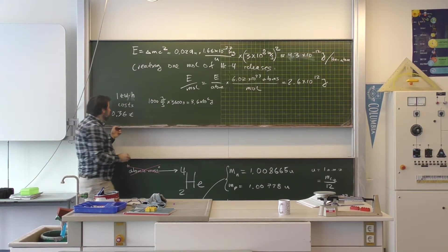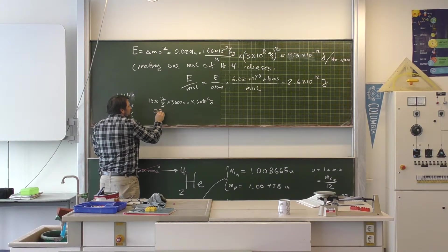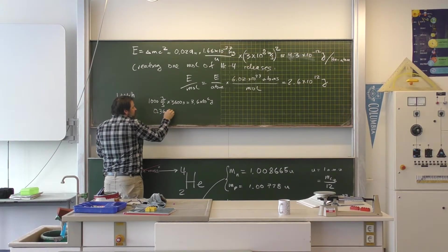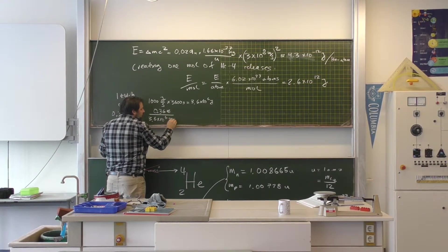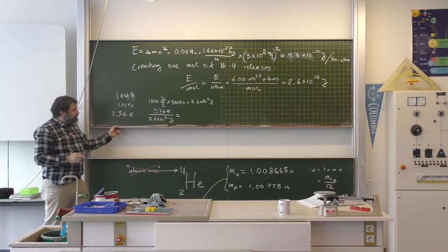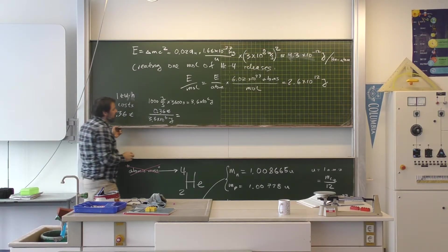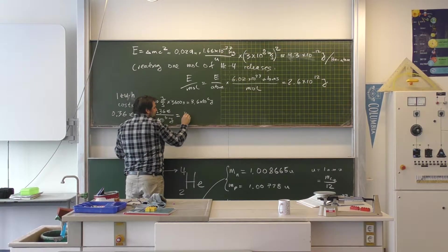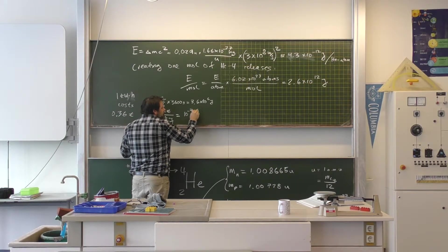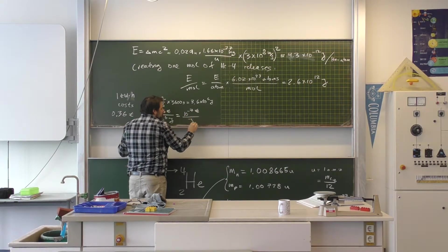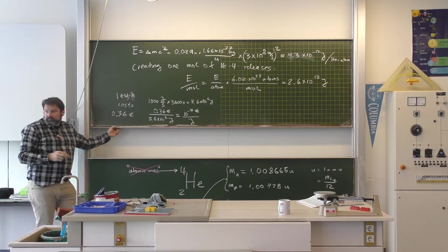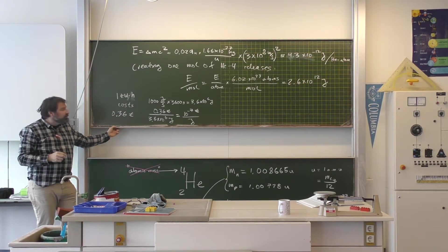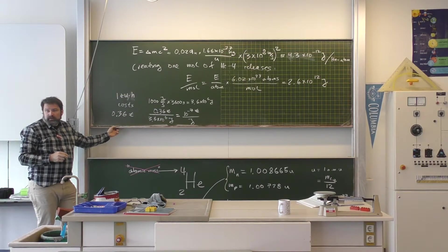So, that means if we're paying 0.36 euros for 3.6 times 10 to the 6 joules. That means we're spending 10 to the minus 7 euros per joule. Is that right? Yeah, that's right. Correct? Are you happy with that? Okay.